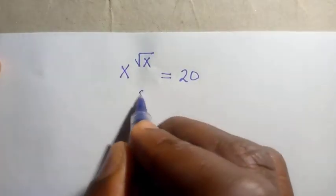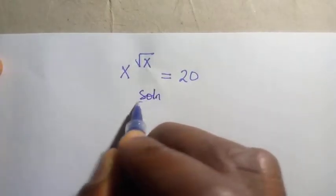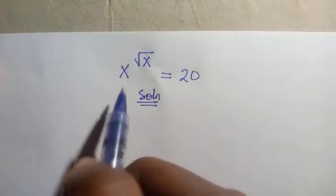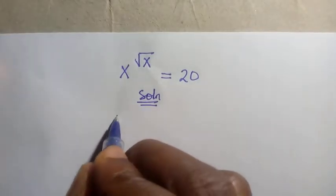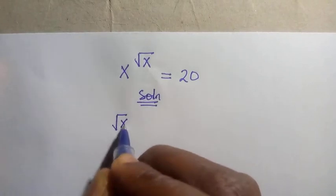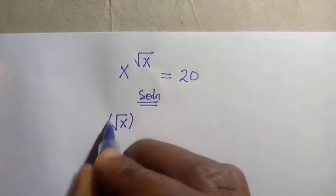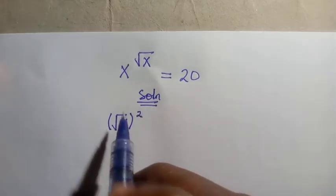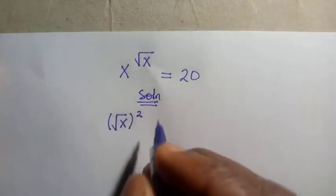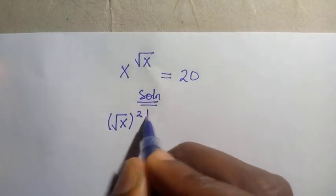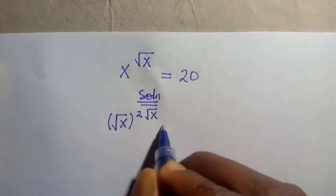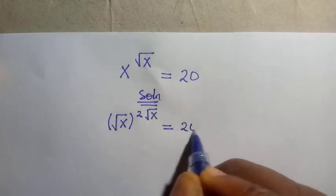So to solve this, we are going to rewrite this x as root x raised to power of 2, which is still the same thing as x. Then we multiply it with this root x equals 20.